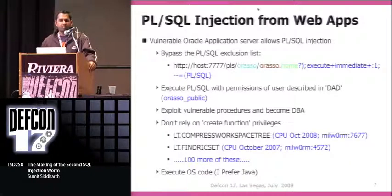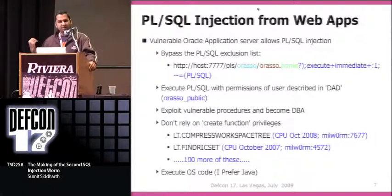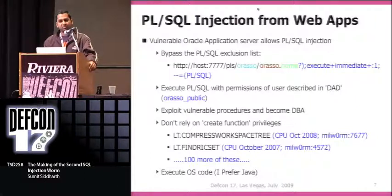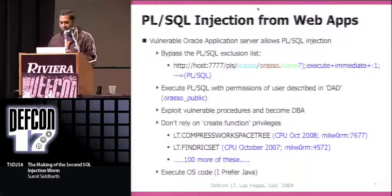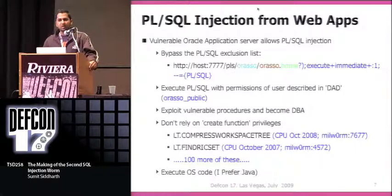When talking about web applications, when will you typically encounter a PL/SQL injection? A classical example is Oracle application servers. Oracle application servers have had a series of vulnerabilities in the past. This particular example was a flaw in the PL/SQL gateway, which was fixed by Oracle in 2006. This is shown not to demonstrate a 2006 vulnerability, but to give a general idea of how to exploit PL/SQL injection from web applications. The URL part after PLS is called the DAD — database access descriptor — and the injected PL/SQL executes with the privileges of the DAD user.